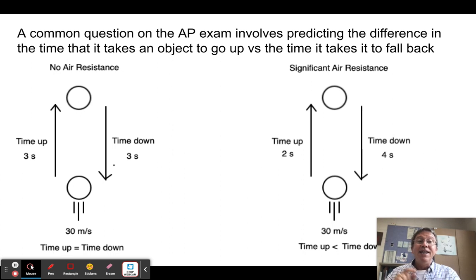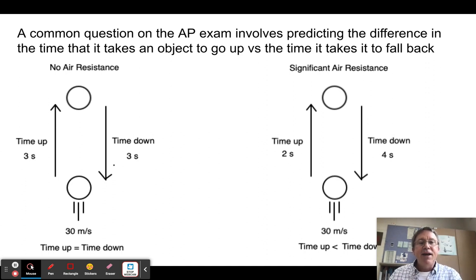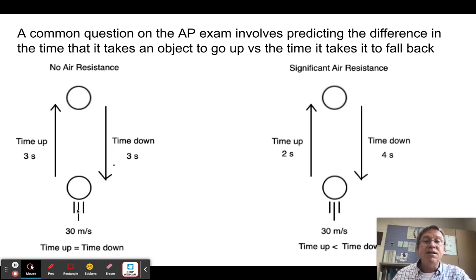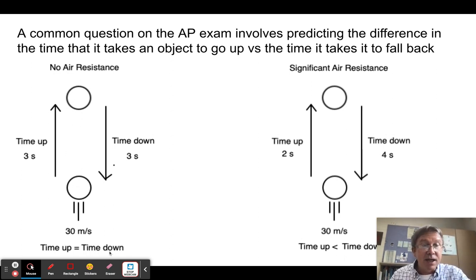This comes up on the AP test a lot—it's a cool question. If I throw an object upward and air resistance is negligible, and I throw it up at 30 meters per second, it's going to go up for three seconds—because acceleration equals delta V over T, so zero minus 30 over negative 10 gives three seconds. It's going to go up for three seconds and come back down for three seconds, so time up equals time down.